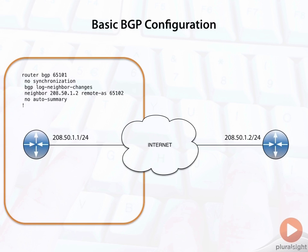On the left-hand side, we've got a router configured for BGP Autonomous System 65101. You can see a basic configuration there. There's no synchronization, we're going to log our neighbor changes, and we've defined the neighbor. The neighbor is 208.50.1.2, and they're in Autonomous System 65102.